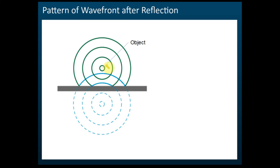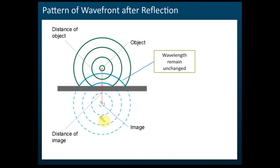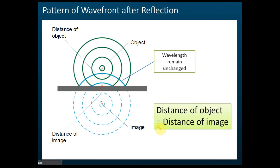This wave front diagram for reflections of a circular wave usually comes up in objective questions. We call this point the image, and this is the object. After reflection, the wavelength remains the same and the wave front is still the same. The distance of the source from the reflector is the distance of the object, and the distance of the image from the reflector must be equal to the distance of the object — these two distances must be the same. In exams, they sometimes draw the image further or nearer just to confuse you, so make sure the distances are equal.